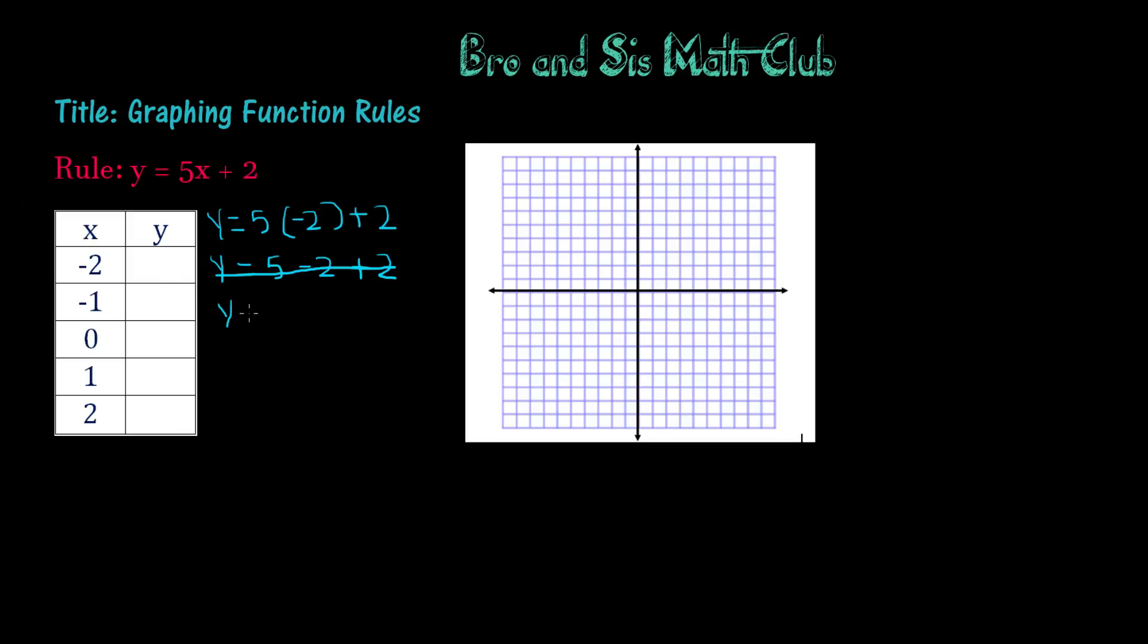So in this case, y equals negative 8. So let's go ahead and plug that in right here. Let me use a different color because that is not visible. So for the value of x, which is negative 2, if you use the rule y equals 5x plus 2, the y value that we'll get is negative 8.